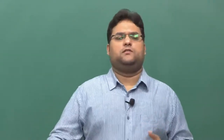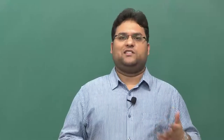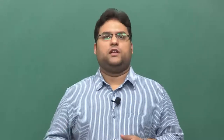Another example of how the central executive controls attention is provided by situations where a person must focus on relevant stimuli while ignoring irrelevant ones. In a visual search scenario, you must focus attention on targets while ignoring distractors. Some people have been found to be better at focusing attention than others.